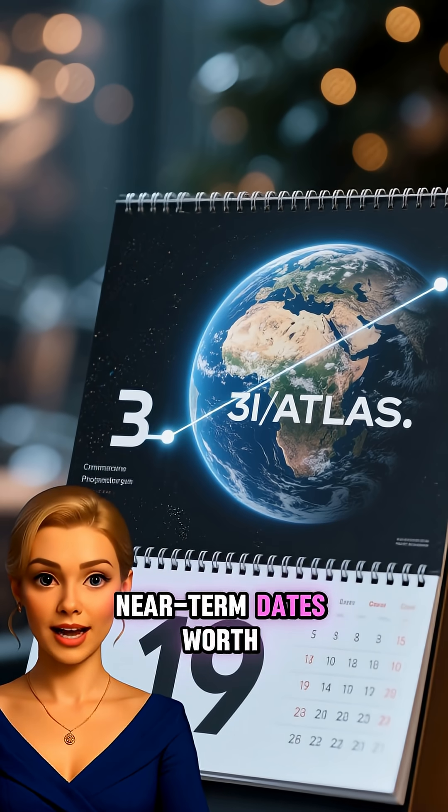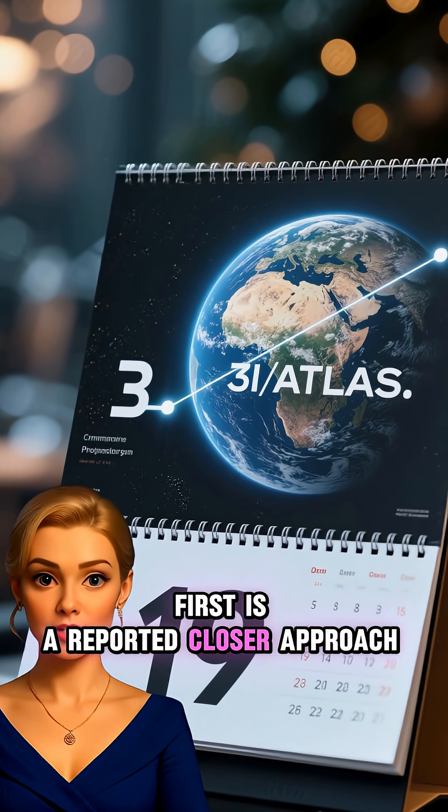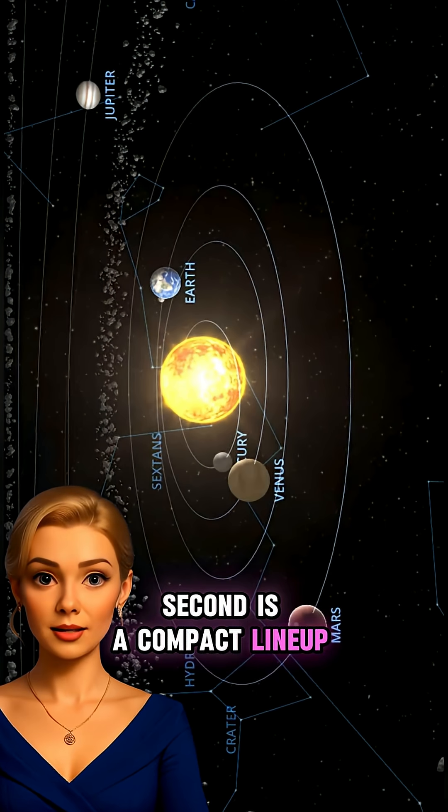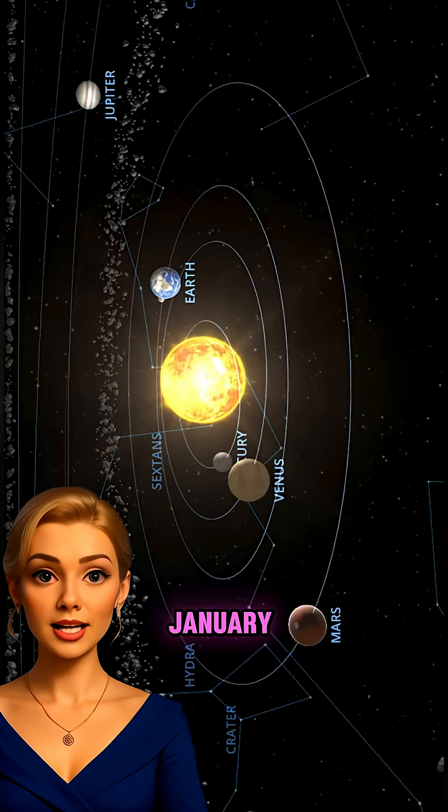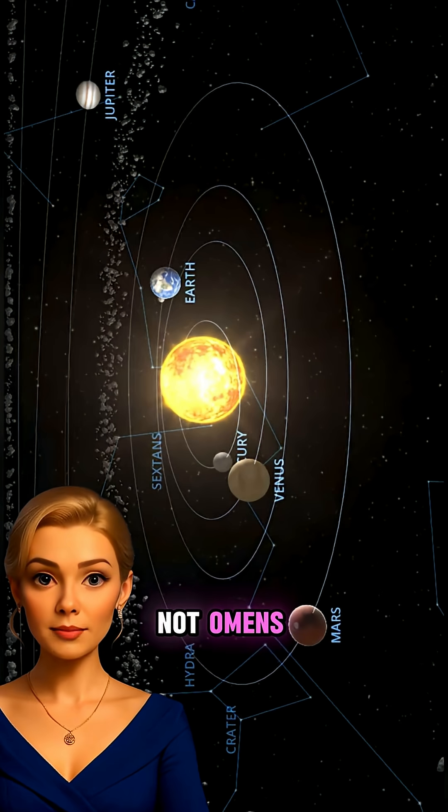There are two near-term dates worth noting for observers. First is a reported closer approach to Earth around December 19th. Second is a compact lineup of the inner planets in early January. Planetary alignments are geometry, not omens.